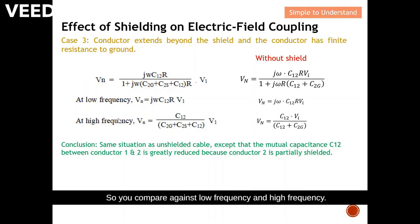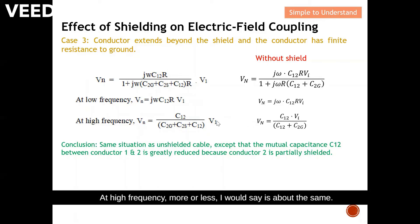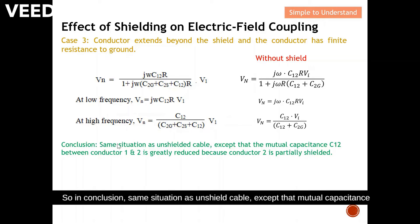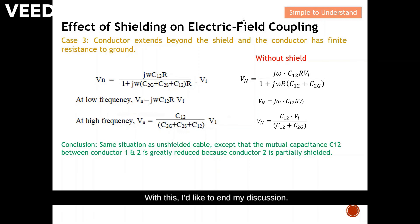Comparing at low frequency, it is exactly the same. At high frequency it's more or less about the same, with just some contribution from C2S due to shielding. In conclusion, this case is the same situation as an unshielded cable, except that the mutual capacitance C12 between conductor one and two is greatly reduced because conductor two is partially shielded. With this, I'd like to end the discussion.